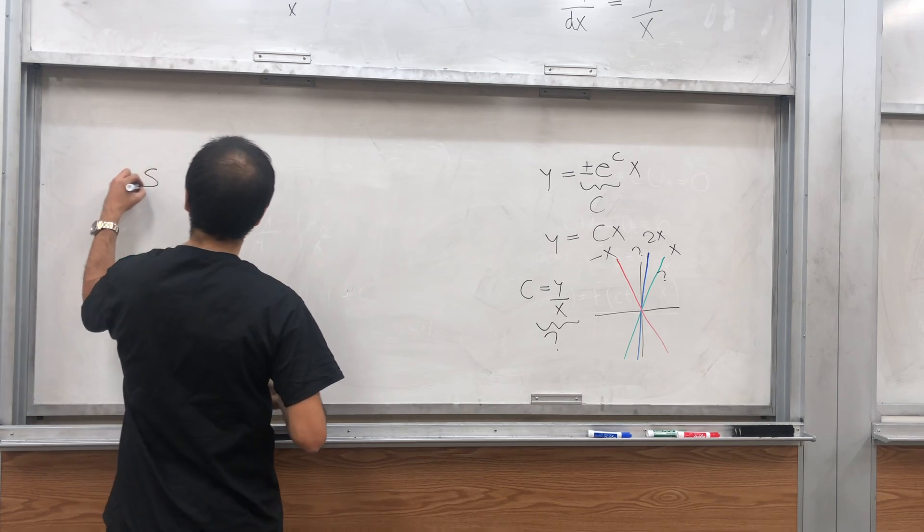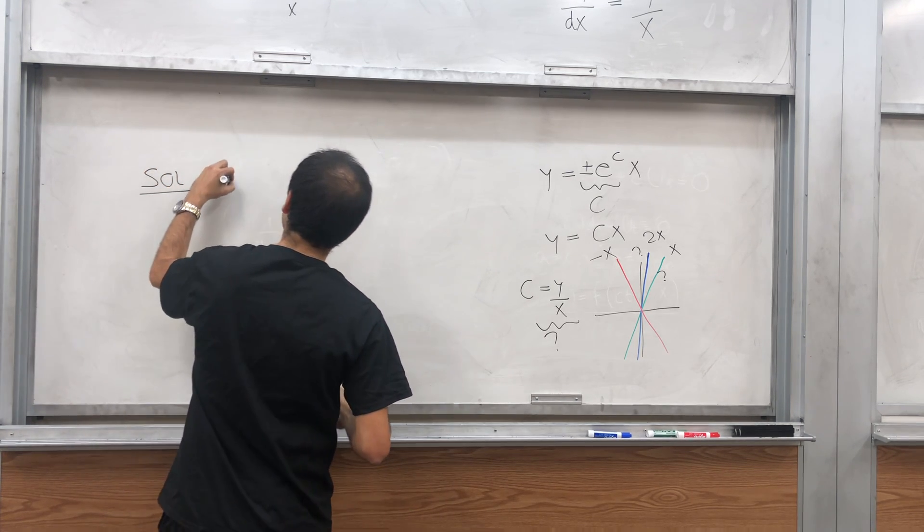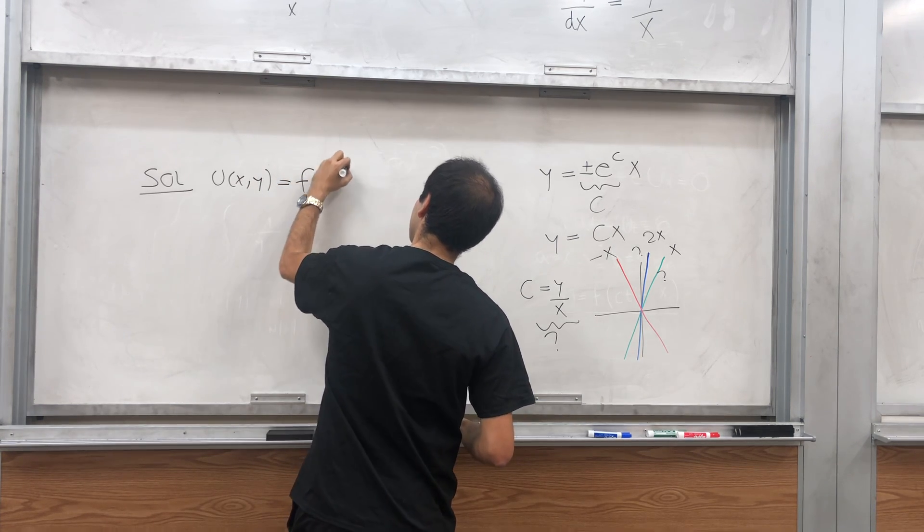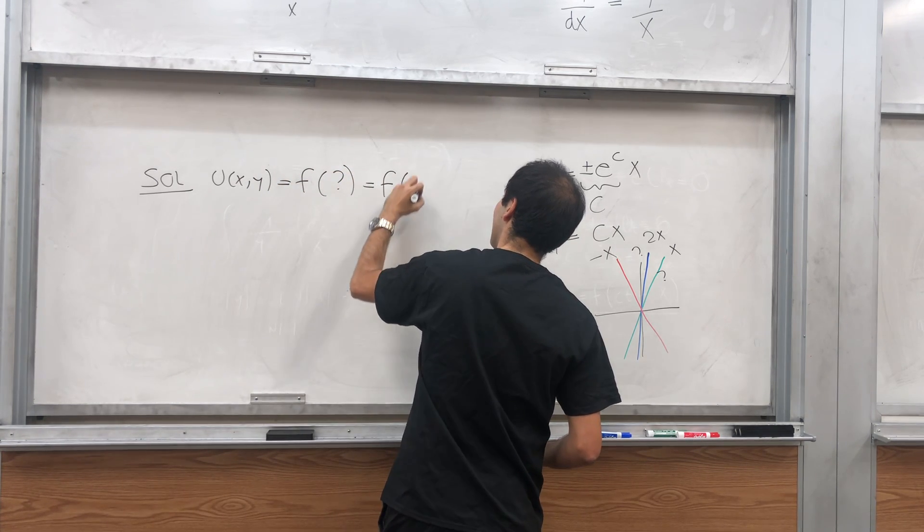So just like last time, the solution is just u of x, y, it's f of question mark, and that's f of y over x.